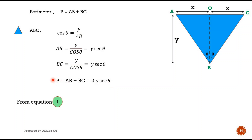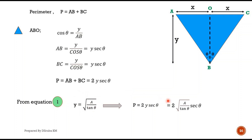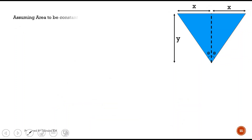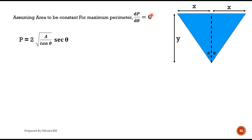From equation one, y = √(A / tan θ), we can write the perimeter as P = 2 × √(A / tan θ) × sec θ. We keep this as equation two. Assuming area to be constant, the perimeter varies according to the angle θ. Therefore for minimum perimeter, dP/dθ must equal zero.